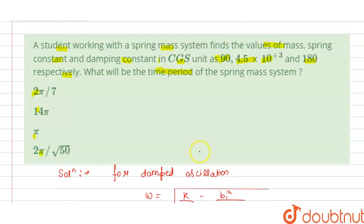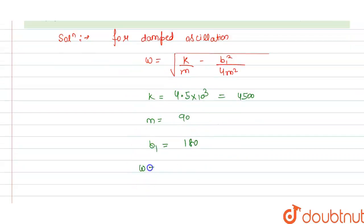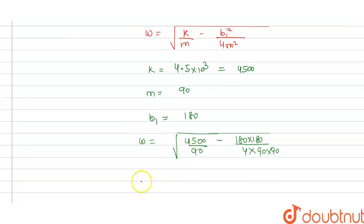And the damping constant b1 is 180. So if we put all values here, we have k that is 4500 divided by mass that is 90, minus this is 180 multiplied with 180 divided by 4 and 90 multiplied with 90.